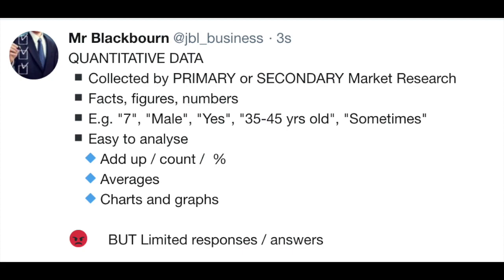Quantitative data relates to facts, figures, and numbers. So if you give somebody a questionnaire and say: how often do you go to the gym? Sometimes, never, every day. How old are you? 25 to 35, 36 to 46, 47 to 57. These produce facts, figures, and numbers called quantitative data.